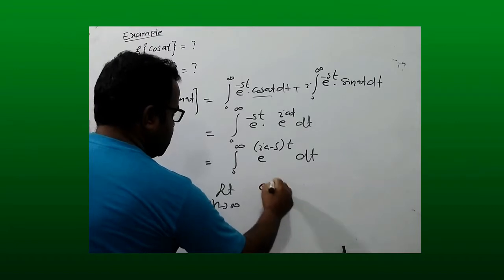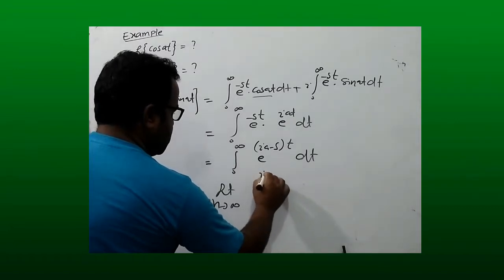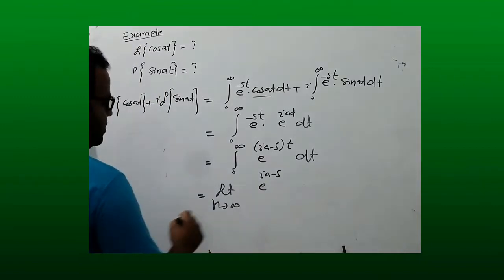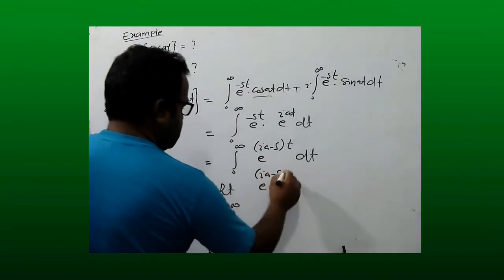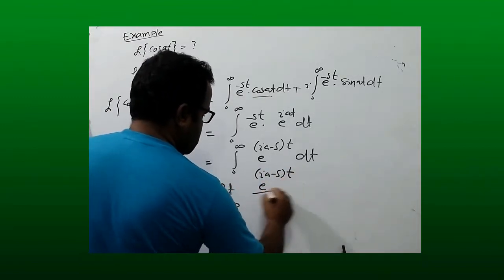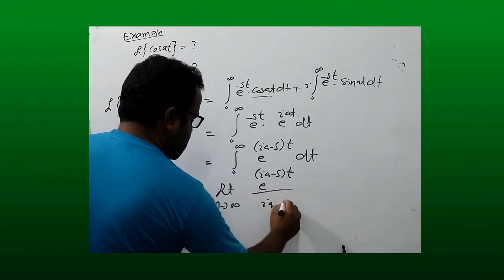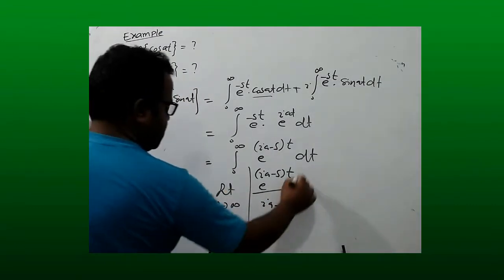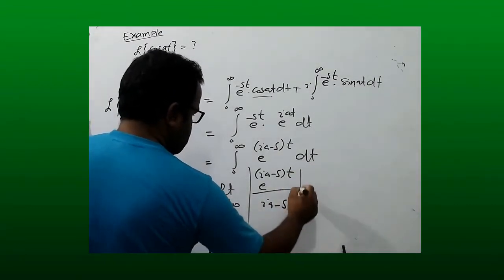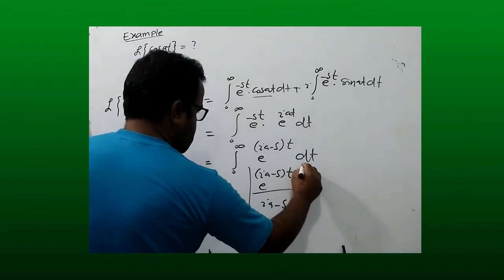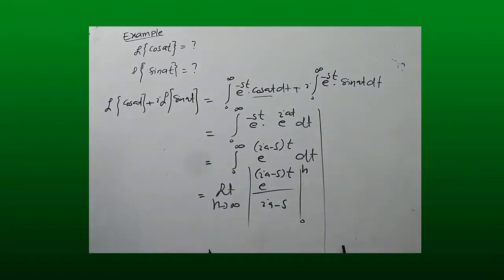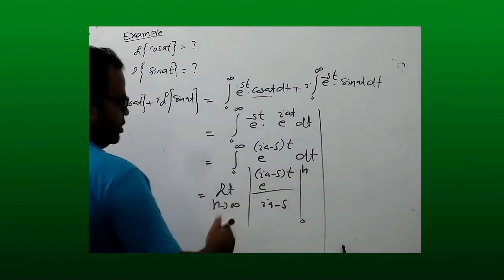Taking the limit as h approaches infinity, this evaluates to e^((ia - s)t) divided by (ia - s), evaluated from 0 to h. We then apply the upper limit minus the lower limit.